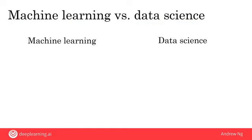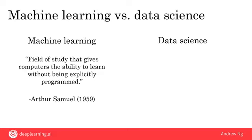To formalize these two notions: machine learning is the field of study that gives computers the ability to learn without being explicitly programmed. This is a definition by Arthur Samuel, one of the pioneers of machine learning, who was famous for building a checkers-playing program that could play checkers better than he himself could. A machine learning project will often result in a piece of software that runs and outputs B given A.